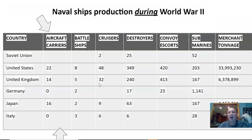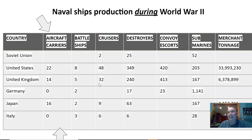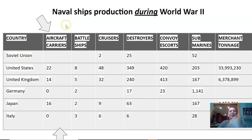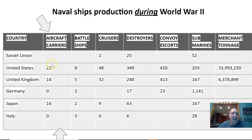There were multiple naval battles in World War II where the ships of Japan and the United States never even saw each other — fought completely by planes going back and forth from the aircraft carriers. This chart shows the dominance the United States had in naval ship production during World War II. Especially in the aircraft carrier category, the absolute advantage that American industry, American population, and their separation from all the combatants gave them is clear — 22 aircraft carriers built during the war, putting everybody else way behind.